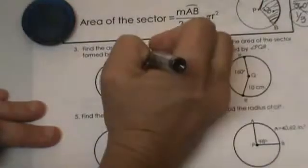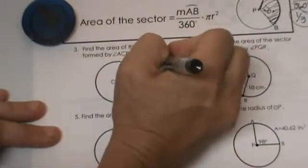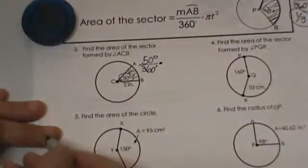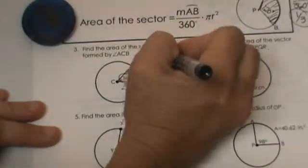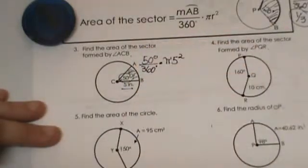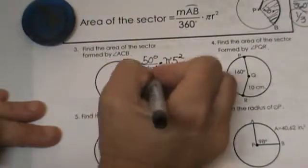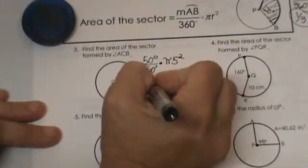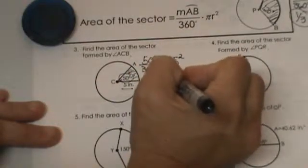Our angle is 50 and that is 50 out of 360 times the area. We have the radius that is 5, so we are going to take pi times 5 squared. So let's reduce our fraction: 50 over 36, I am going to reduce that to 5/36 times 25 pi.